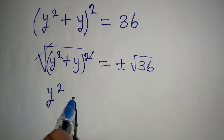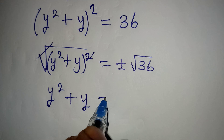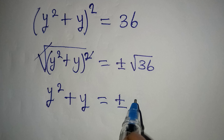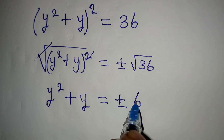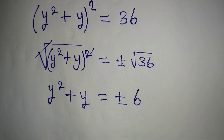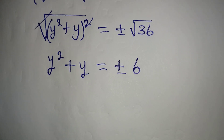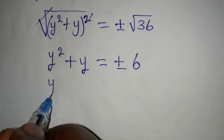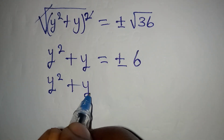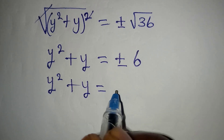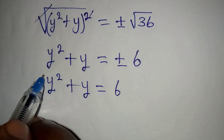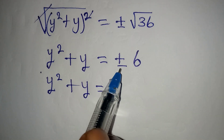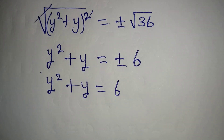The square root and the square cancel, so y² + y will be equal to a positive or negative square root of 36, which is 6. This means we have two equations to deal with. The first is y² + y = 6. I'm going to deal with this first, and then come back to pick the negative and deal with it as well.